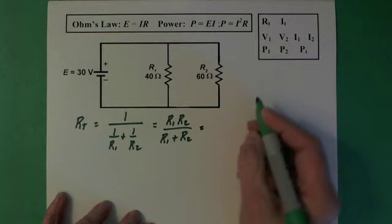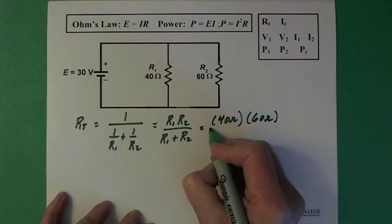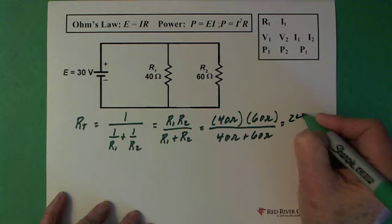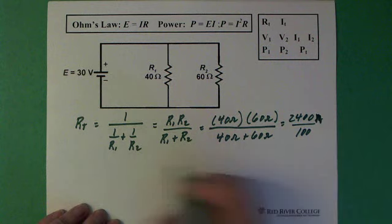So, resistor 1 is 40 ohms. Resistor 2 is 60 ohms. And we divide it by the two of them added together. 40 ohms plus 60 ohms. And we end up with 2,400 divided by 100. So here we end up with R total equaling 24 ohms.